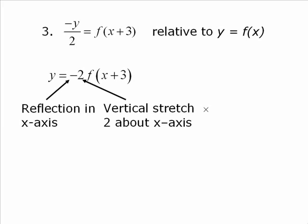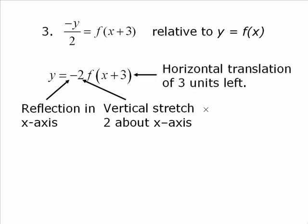So every y-coordinate is doubled. And then we have a horizontal translation of 3 units to the left. So 3 transformations on this graph. And it required a little bit of work to get it into an understandable form.